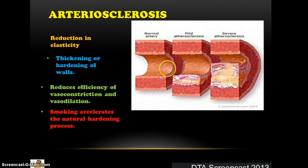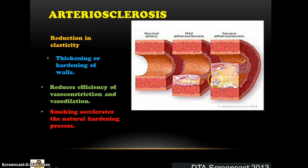Looking at these images, we can compare a normal artery, someone with mild arteriosclerosis, and a severe case — showing a large increase in arterial hardening and therefore a reduction in diameter.